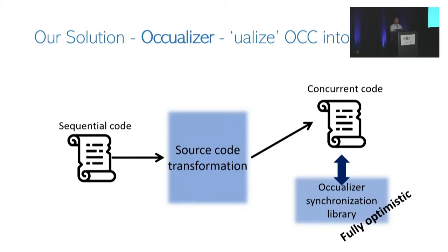To solve these problems, we designed OCCUalyzer, a transformation that utilizes optimistic concurrency control for trees. OCCUalyzer consists of a set of mechanical source-to-source code transformations and a synchronization library that uses a novel form of optimistic concurrency control. The transformations inject calls to the synchronization library into the input sequential tree code, producing a scalable concurrent tree with optimistic concurrency control.